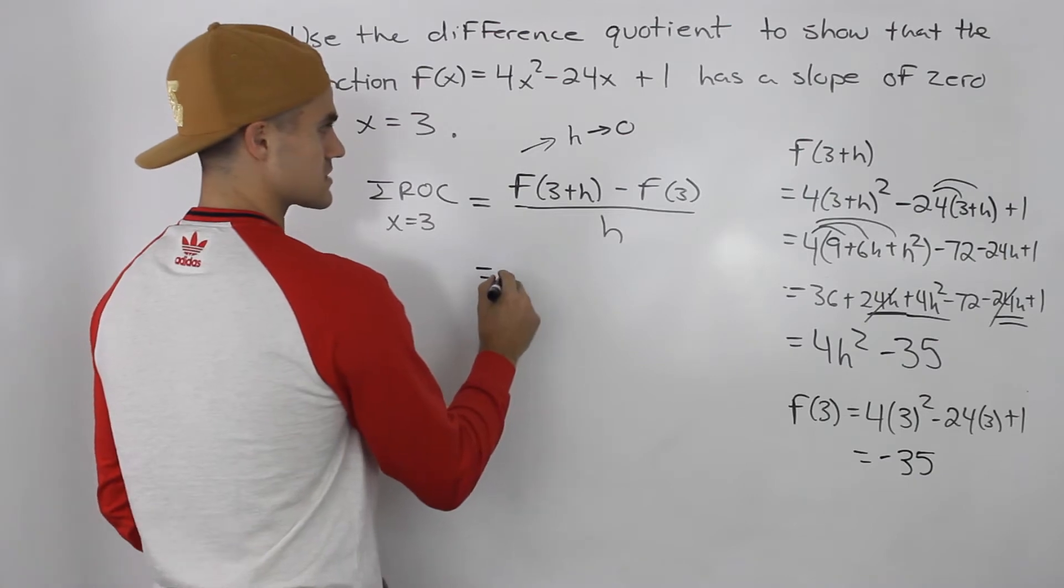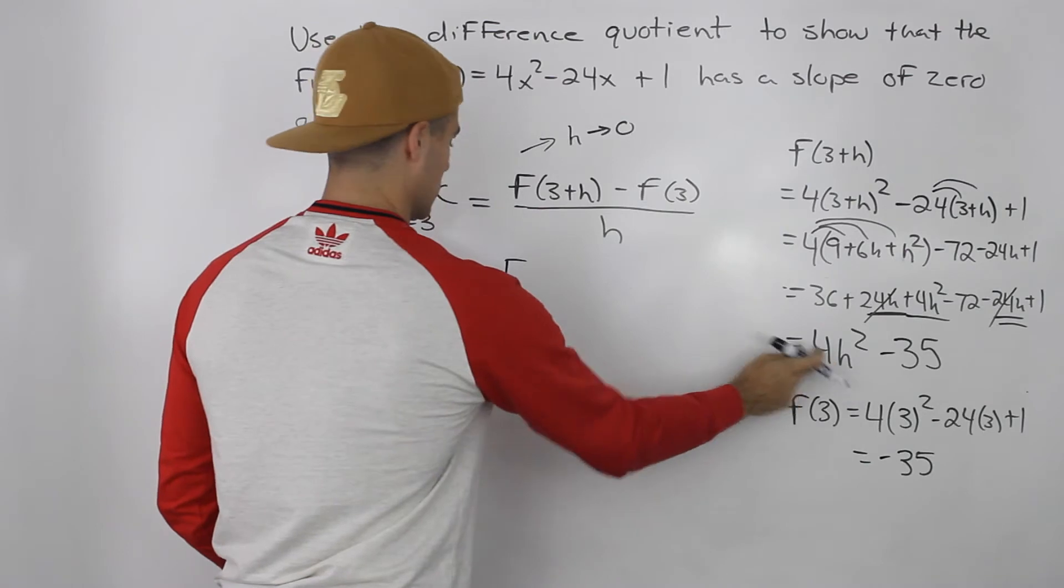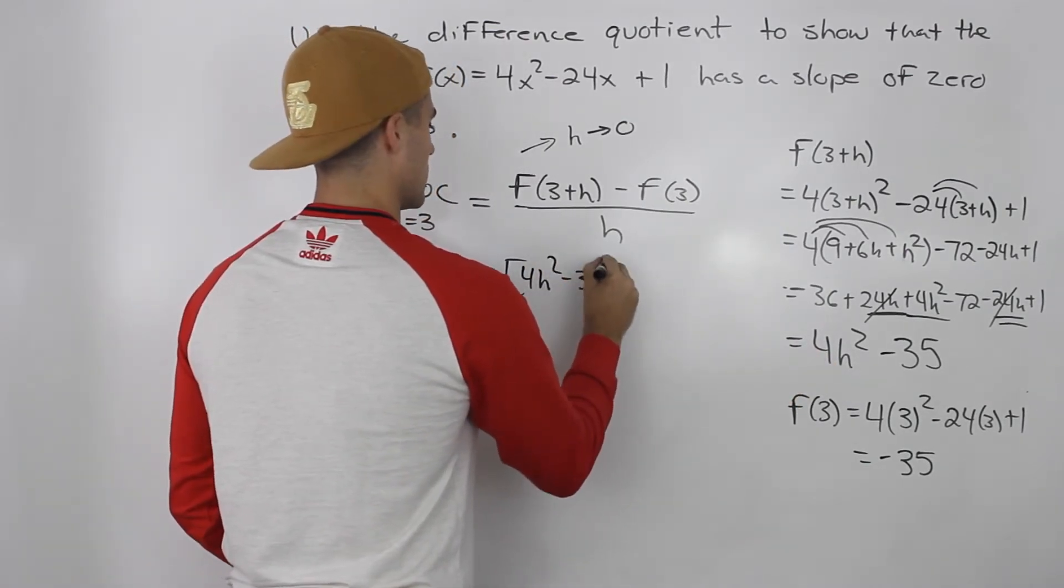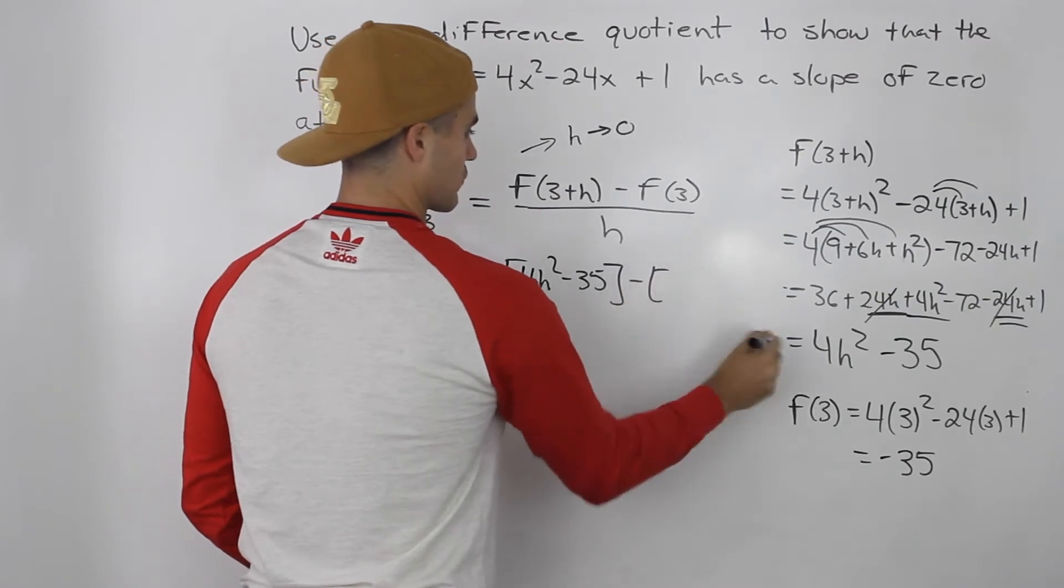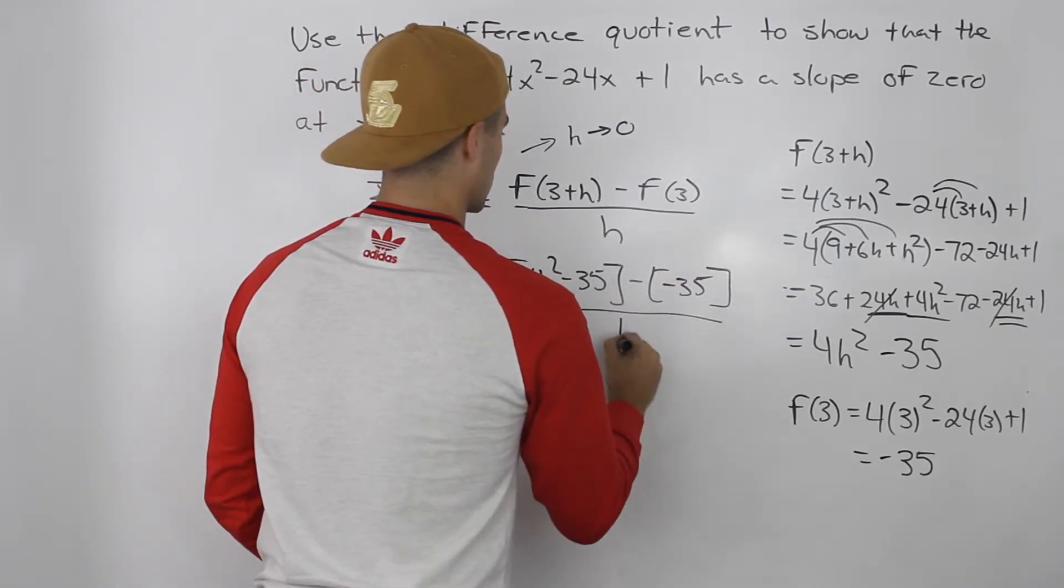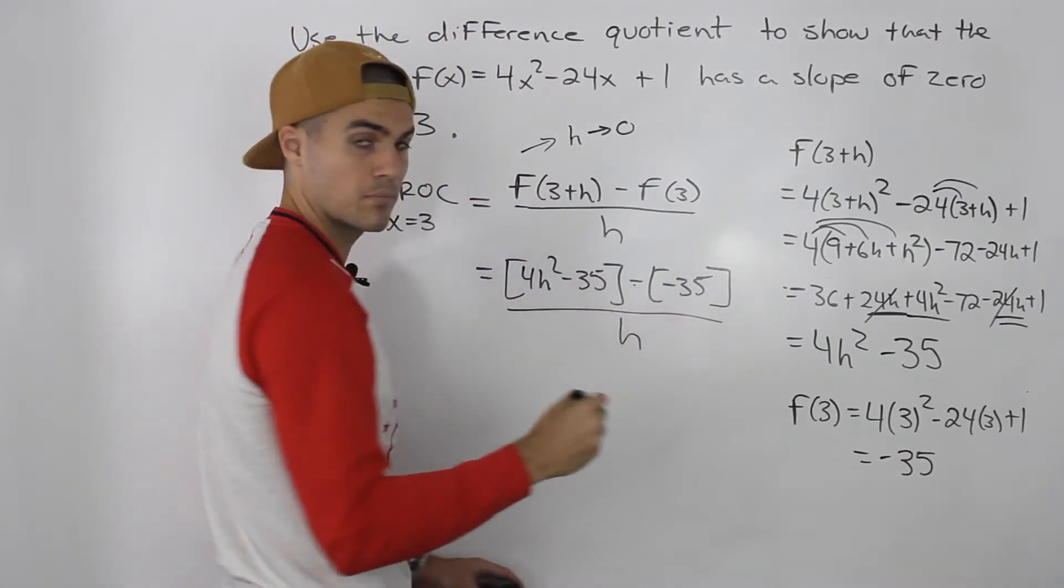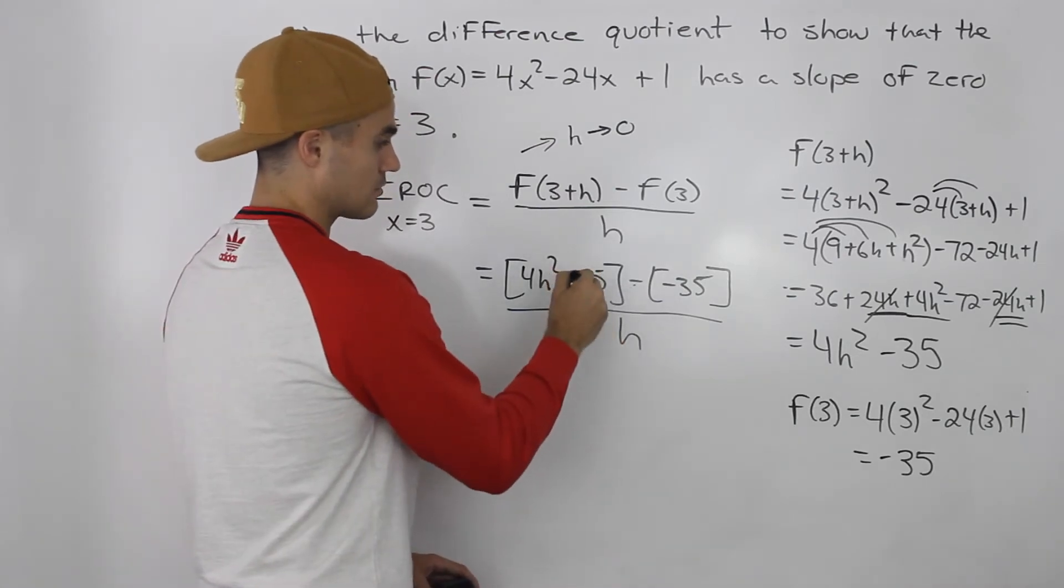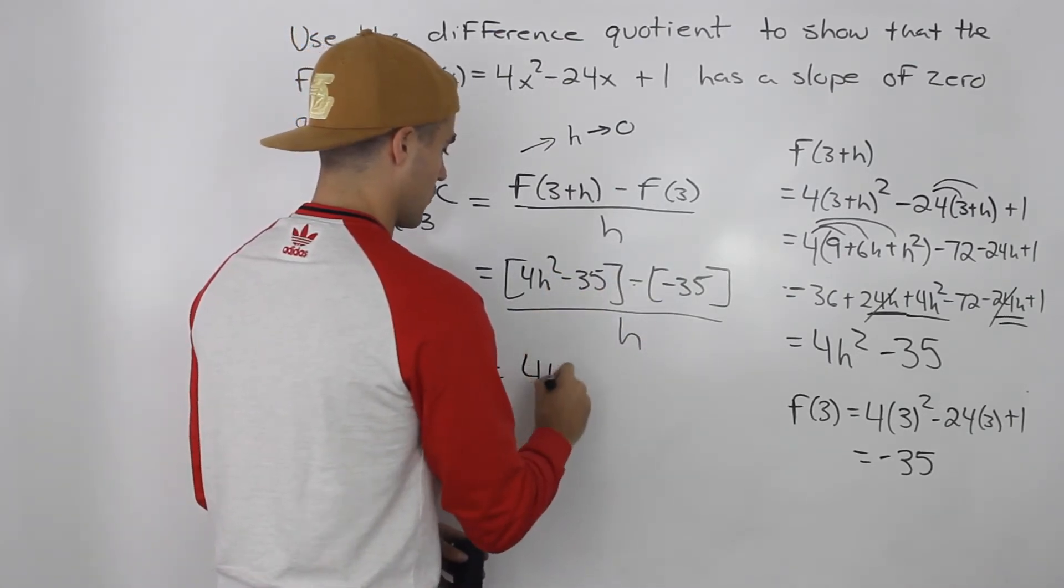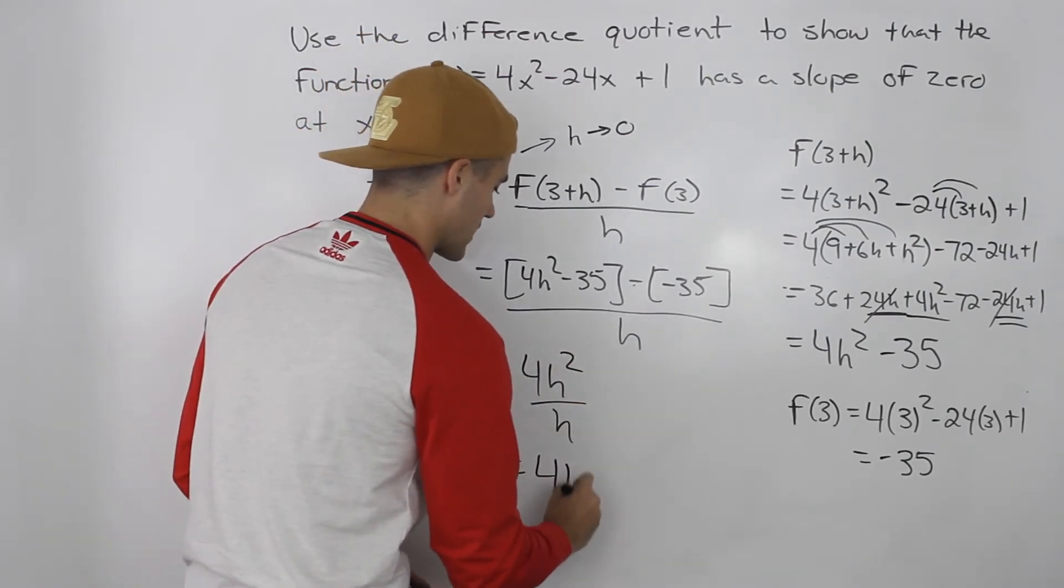So notice how we can simplify this now. So f(3 + h) would be 4h² - 35 minus f(3), which is -35, all over h. And then notice -35, this negative negative 35 would turn into positive 35. So -35 + 35 would net out to 0. And we're just left with 4h² over h. That equals just 4h.